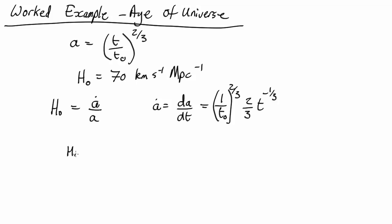Now we need H₀ equals ȧ over a. So that's going to be 1 over t₀ to the two-thirds, so the two-thirds t to the minus one-third, all over a, which is t over t₀ to the two-thirds.